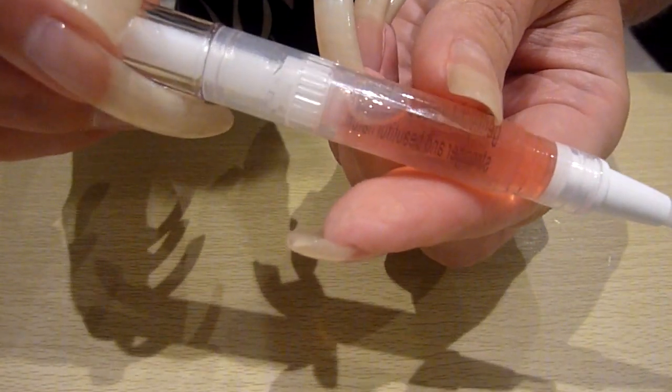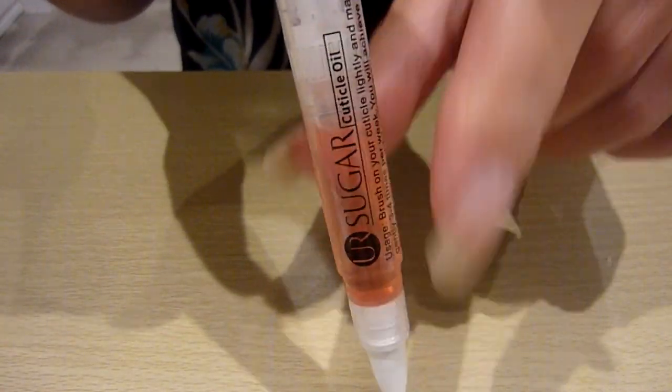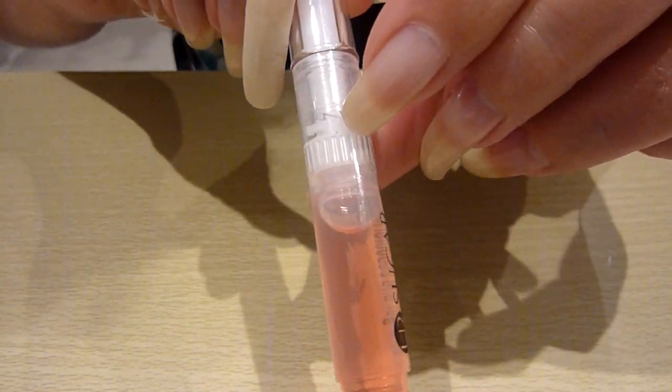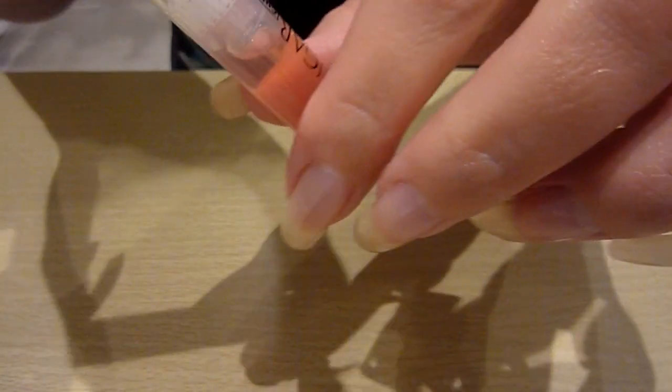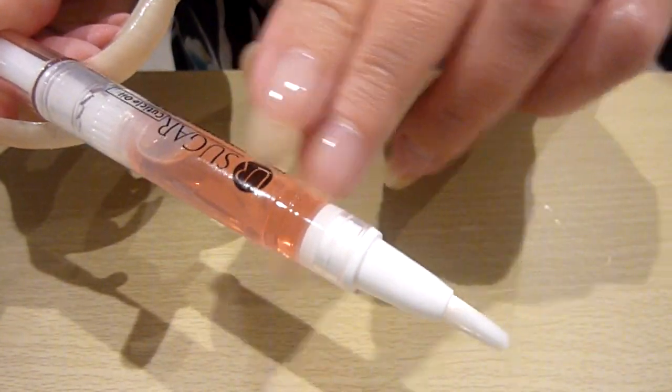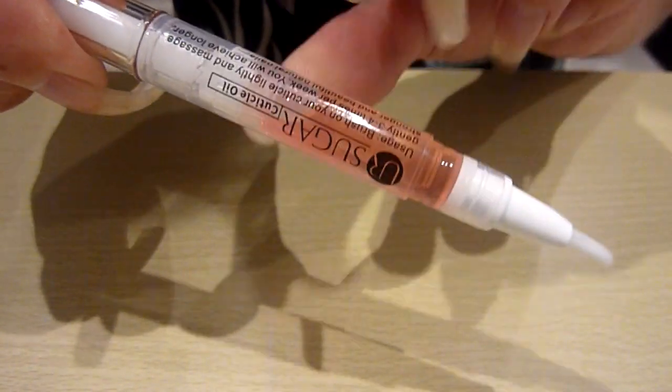And then what you've got to do is, when you buy these to begin with, you've got to make sure that little twizzly thing moves down the barrel. But you need to get the oil into the little brush. So I'll give that a number of turns.